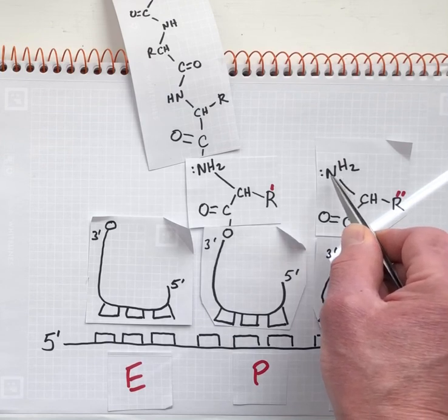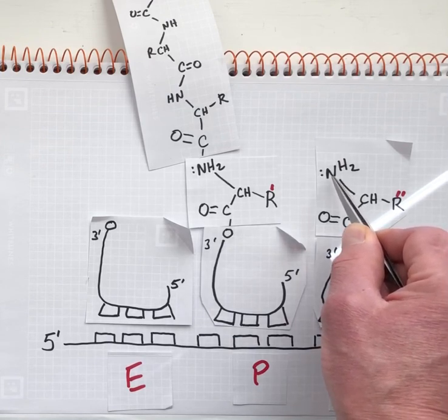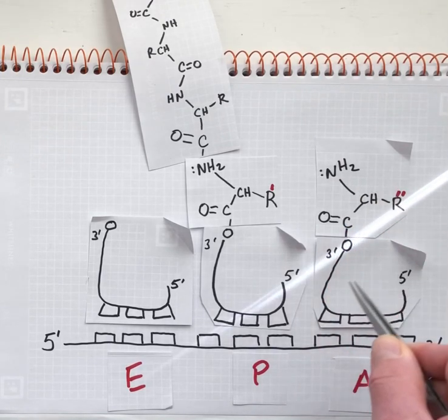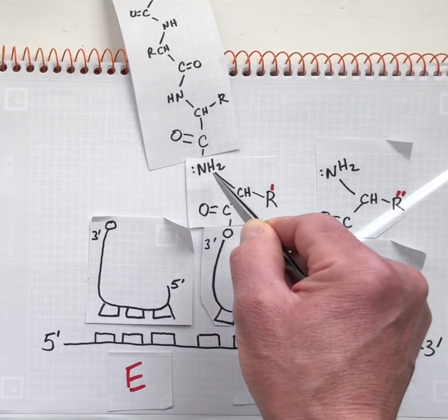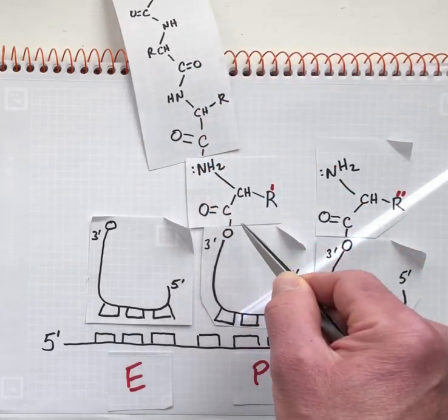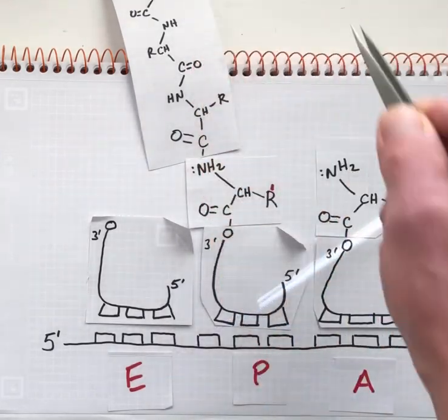We now have a nucleophile, the amino group of this second aminoacyl tRNA. The previous aminoacyl tRNA is now chemically linked to the whole polypeptide.